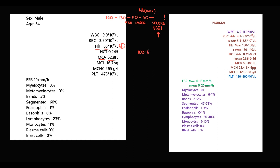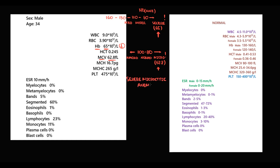For MCV we need two threshold values: 80 and 100. Red blood cells with MCV between 80 and 100 we call normocytes, greater than 100 macrocytes, and lesser than 80 microcytes. In this case MCV is 62.8, so it is microcytic — thereby it is severe microcytic anemia. Usually when hemoglobin is low, red blood cells are also low.